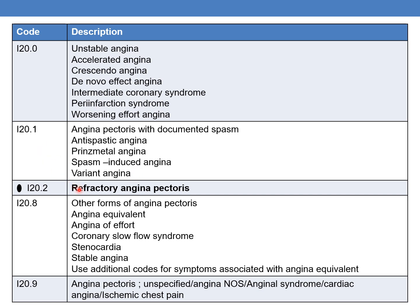The new addition is I20.2, which deals with refractory angina pectoris. This is the new code that has been added in 2023. Next is I20.8, which deals with other forms of angina pectoris.